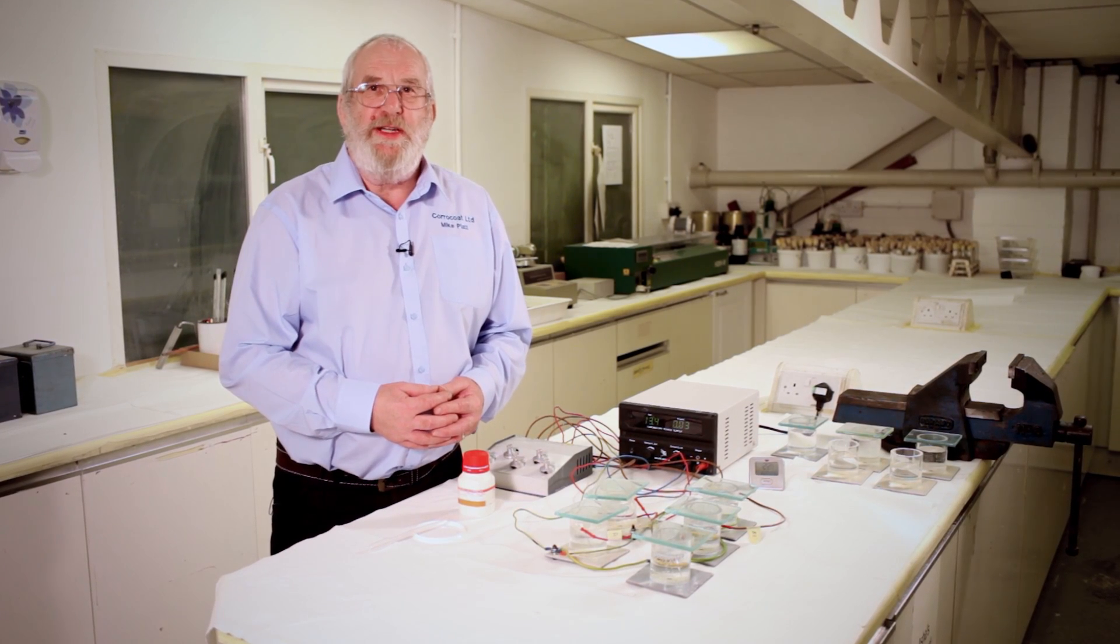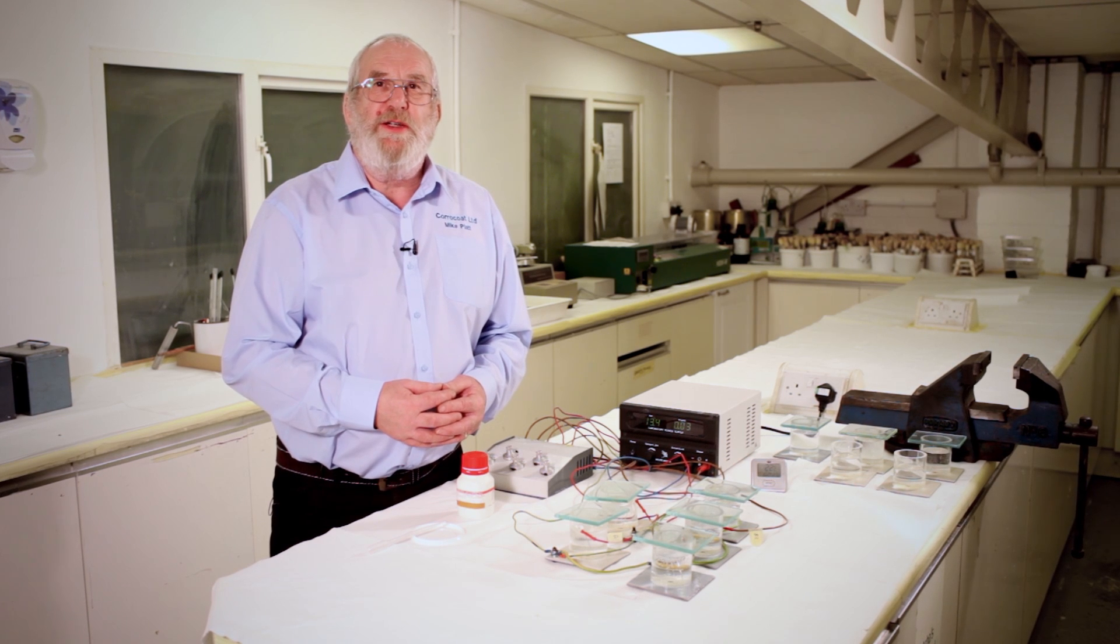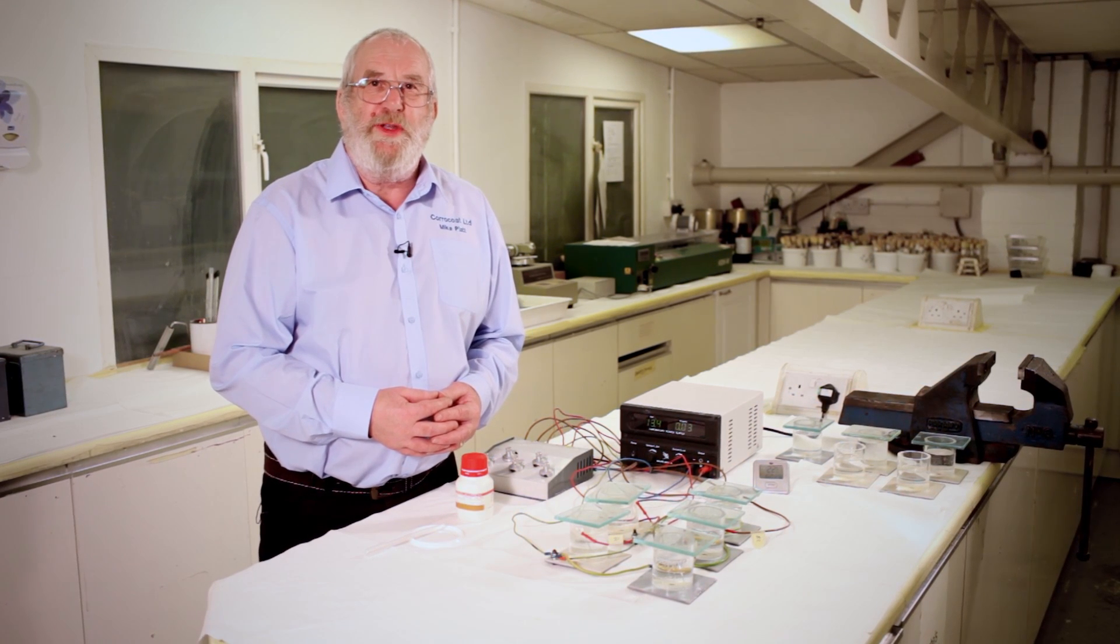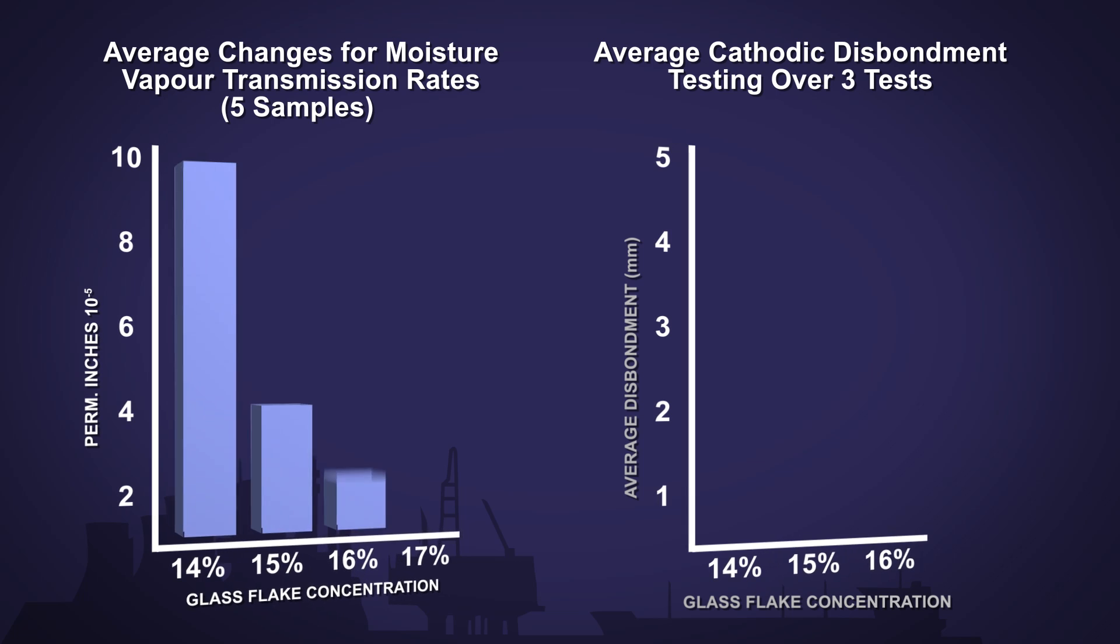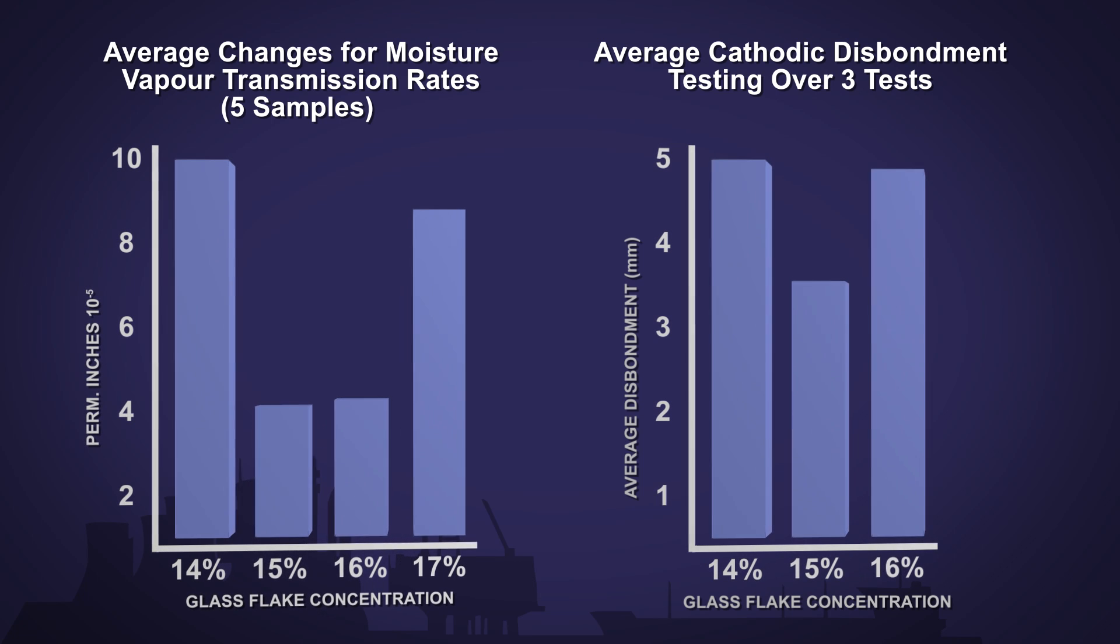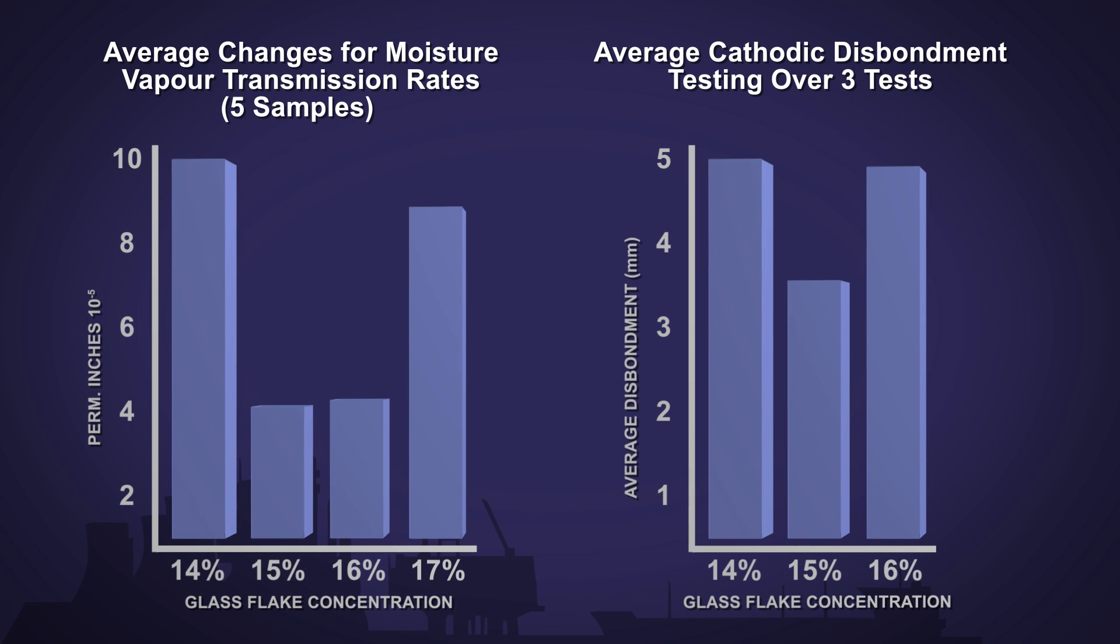Erroneous results have been obtained in the past due to the incorrect assessment of the extent of cathodic disbondment. This is a chart showing that cathodic disbondment and moisture vapour transmission are clearly related.